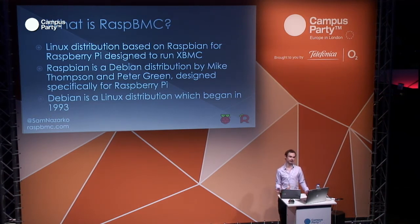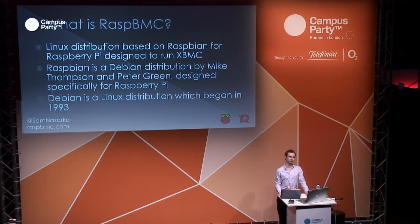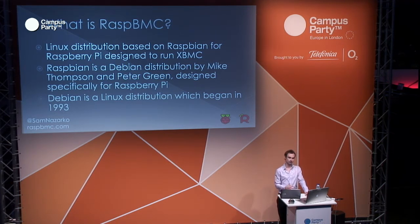Raspbmc is a Debian-based distribution. Debian is a Linux distribution first developed in 1993. It's based on Raspbian, which in turn is a fork of Debian. And what we have there is a distribution that takes advantage of Raspberry Pi's floating-point hardware. I'll talk about the transition from Debian as a vanilla upstream distribution to Raspbian shortly.